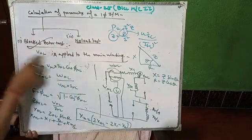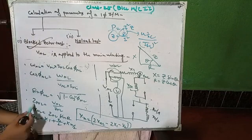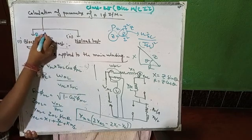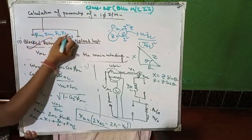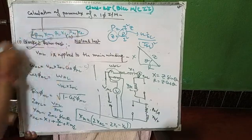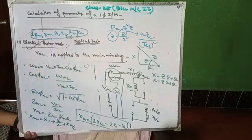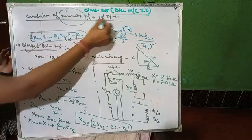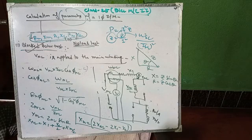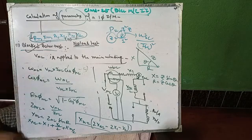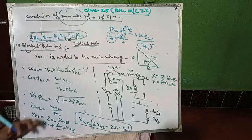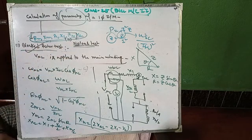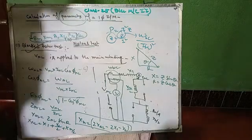Since X1 and X2 are already known from the blocked rotor test, we can now calculate X_m. So all six parameters — R1, X1, R2, X2, R_m, and X_m — can be obtained from these two tests. This completes today's class. In the next class, I will do numericals on the blocked rotor test and no-load test.